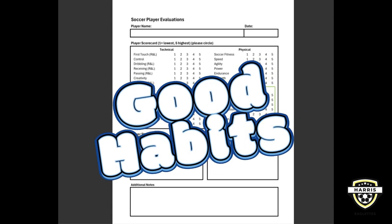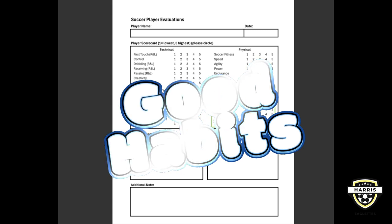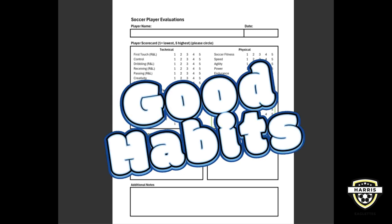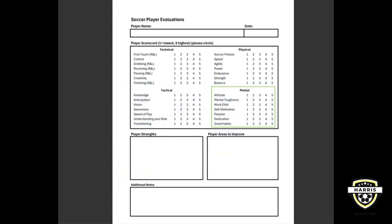And then last, good habits — the routines that help us succeed. This includes things like practicing regularly, eating well, staying hydrated, and getting enough rest. Sometimes we're guilty of taking those things for granted, when they can really have a big impact on the type of player we are and the type of games we're capable of playing. Developing these habits early on sets us up for long-term success, both in soccer and in life. They help us stay focused and perform at our best.